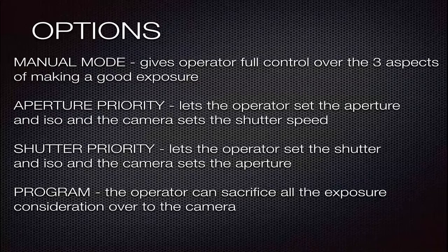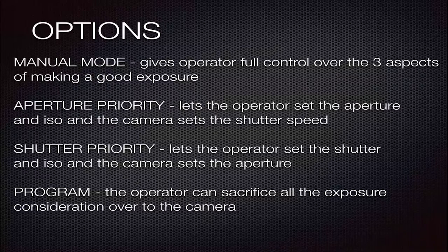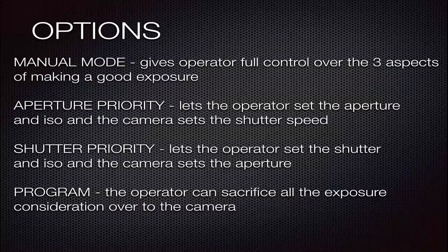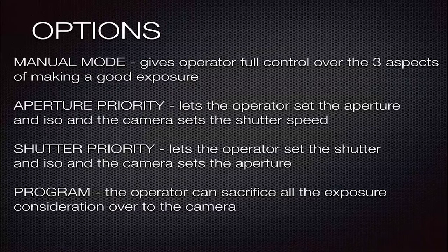So what options do we have? We have manual mode, which gives the operator full control over all three aspects of exposure. We have aperture priority, which lets the operator set the aperture and ISO while the camera sets the corresponding shutter speed. We have shutter priority, which lets the operator set the shutter speed and ISO while the camera sets the aperture. Or we have program mode, where the operator can hand off all exposure considerations to the camera.